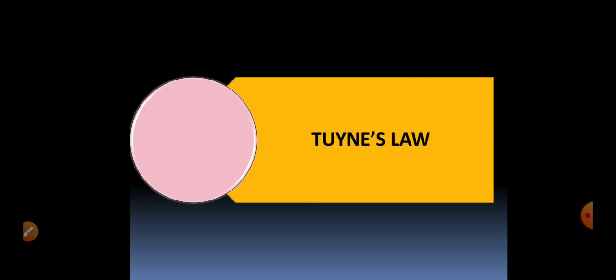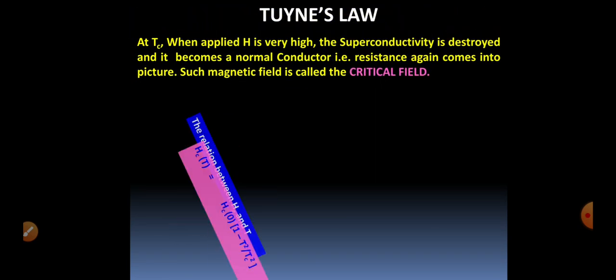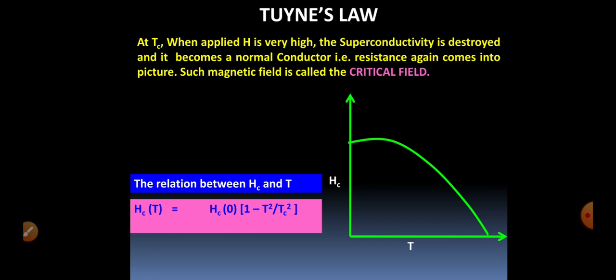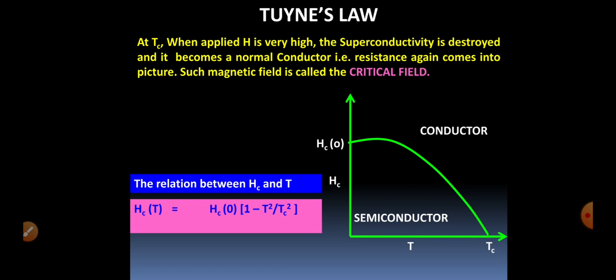Now let's discuss London's law. This law gives the relationship between the applied or external magnetic field and temperature. At the critical temperature, when the applied magnetic field is very high, the superconductivity is destroyed and the superconducting material becomes a normal conductor — meaning resistance again comes into play. Such a magnetic field is called the critical field. According to this law, when temperature is equal to or less than the critical temperature, the material is superconducting; when temperature is greater than the critical temperature, the material is a normal conductor in which resistance plays its own role.